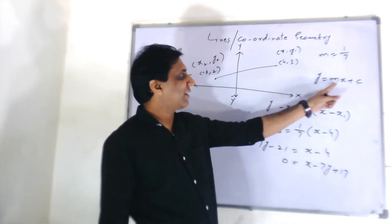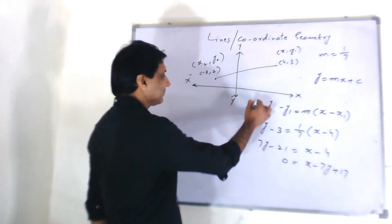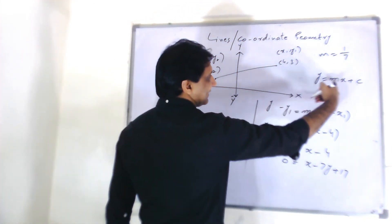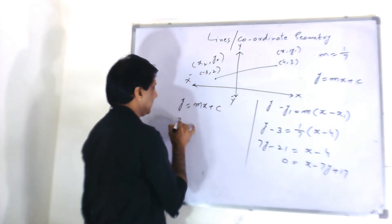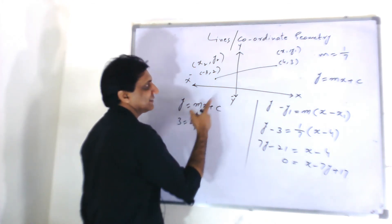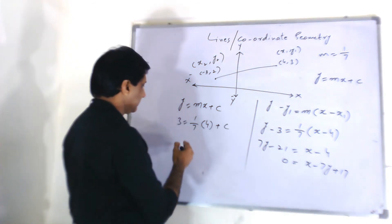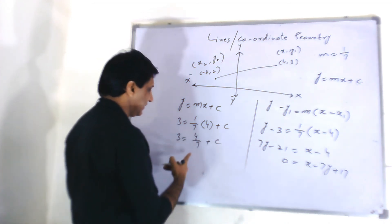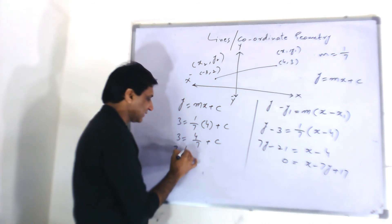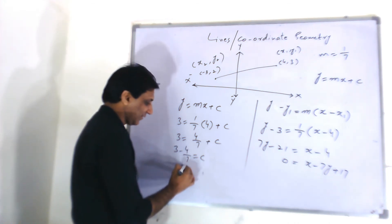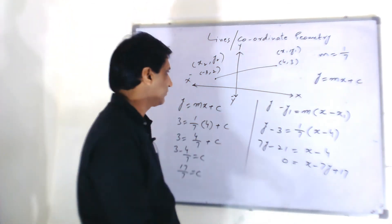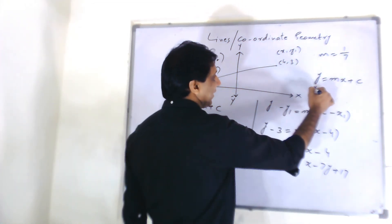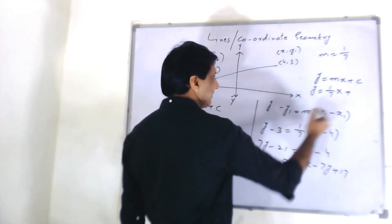The other way is this. Y is equal to M, X plus C. So, X, Y put it here and M here. So, Y is 3. M is 1 over 7 and X is 4. So, 3 is equal to 4 over 7 plus C. You got the value of C, 3 minus 4 over 7. 7 into 3 is 21 minus 4, 17 over 7. So, that's C. Now we have M and C both available. So, you can put the values of Y, M and C. Y is equal to 1 over 7 X plus C is 17 over 7.